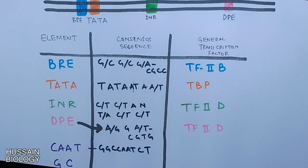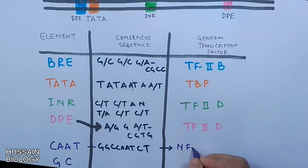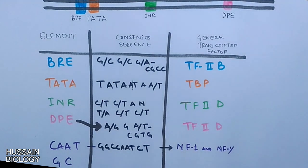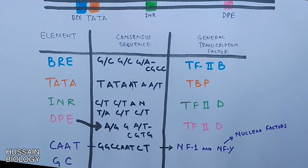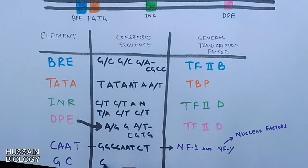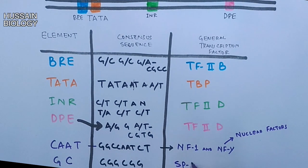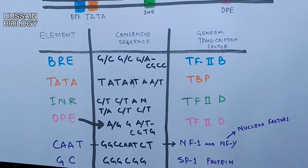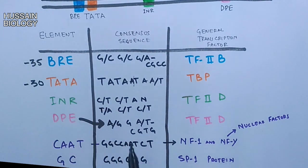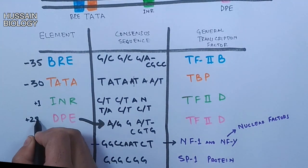The CAAT box gets recognized by NF1 and NFY. NFY are the nuclear factors. Whereas the GC box gets recognized by SP1 protein. And on the left these are the locations in accordance with the plus 1 starting point.